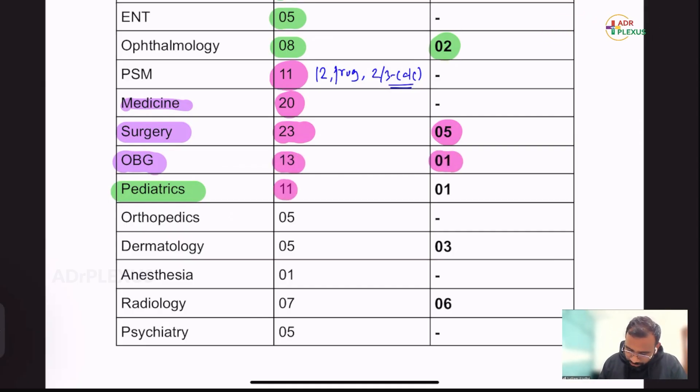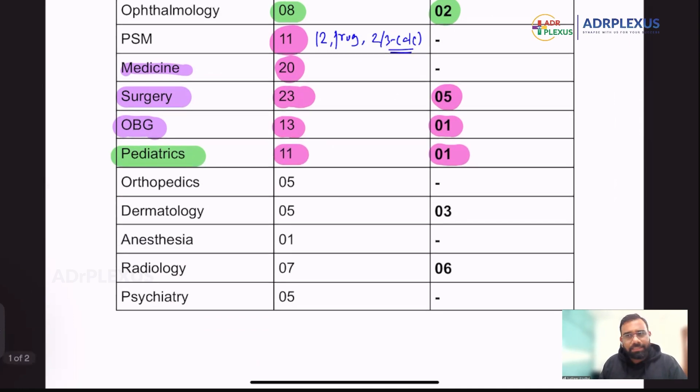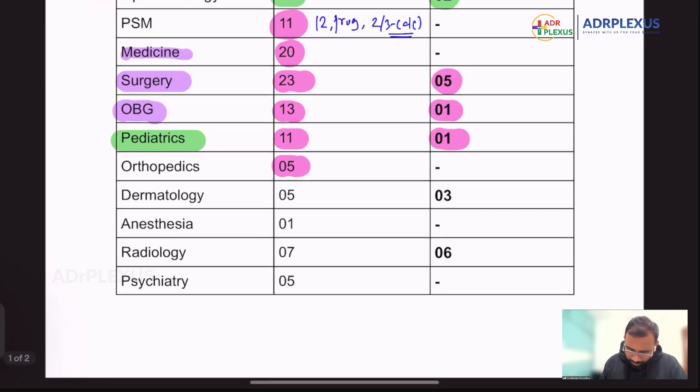And pediatrics, 11 questions were there, including one image-based thing. I think that is chest X-ray, I think. So chest X-ray question. And orthopedics, five direct questions, no image-based, nothing was asked from orthopedics, like direct questions were there. I think only one clinical-based question remaining, all are direct questions, as per my observation.